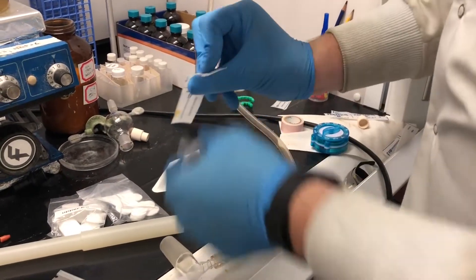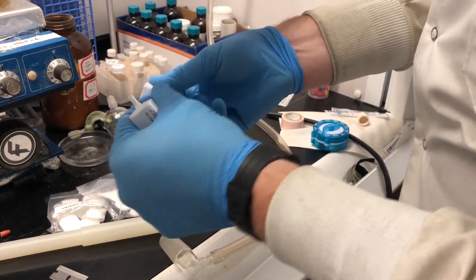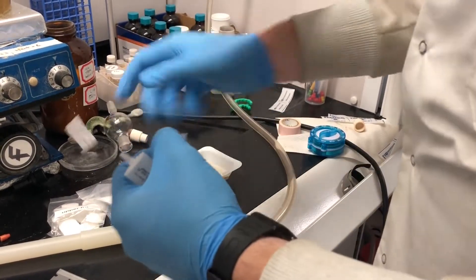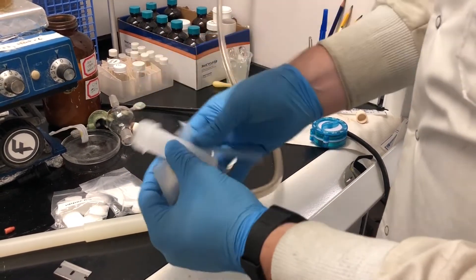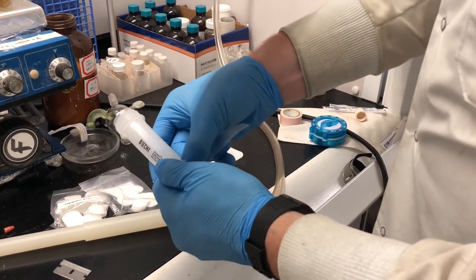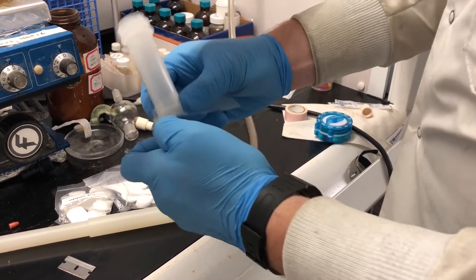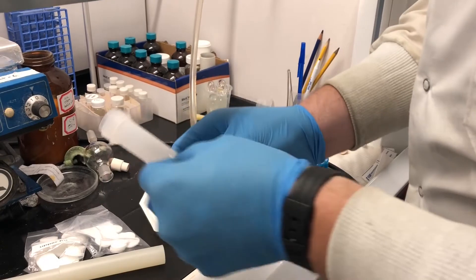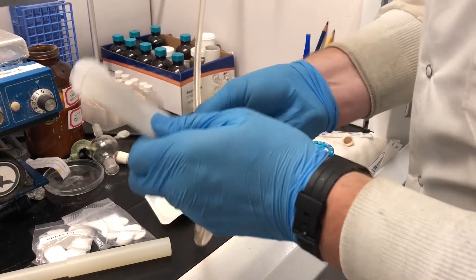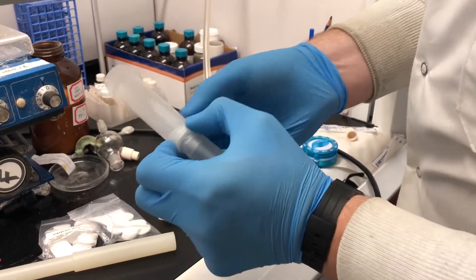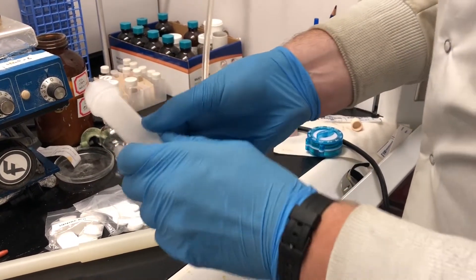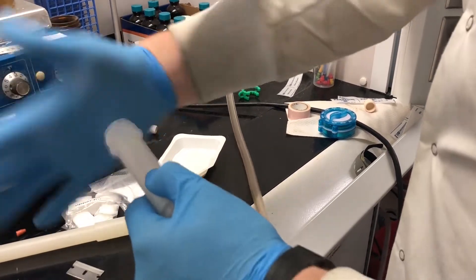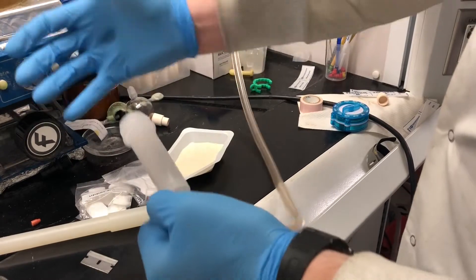You're going to take the parafilm and seal it. It doesn't need to be a tight seal initially. What's going to happen is your vacuum, once turned on, closes that seal. Now we have a tight seal there.